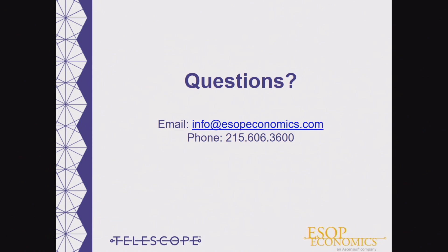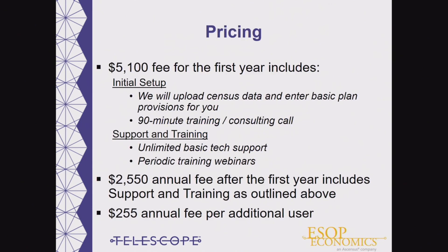Now, to discuss pricing. The initial setup is $5,100 for the first year, which includes entering the basic plan provisions as supplied by your summary plan description. We will format and upload your census, then schedule a 90-minute walkthrough call that trains you and allows us to discuss all the assumptions needed for your study, as well as unlimited tech support and access to periodic training webinars. After the first year, the subscription fee is $2,550, with an additional $255 annual fee per additional user.